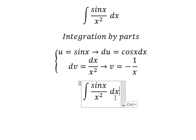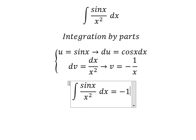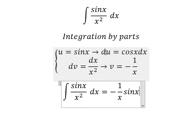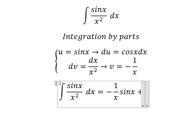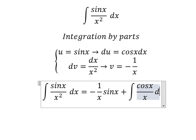Using the integration by parts formula, we have u times v: negative 1 over x multiplied by sin x. Next, we subtract the integral of v du. The negative signs combine to give us a positive, and we have the integral of cos x over x dx.